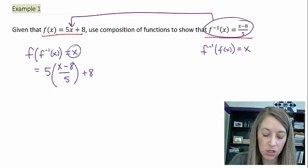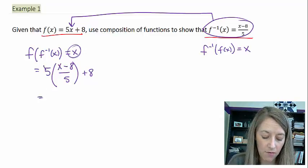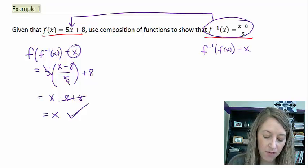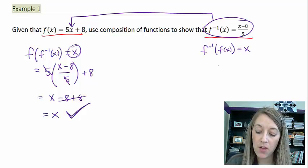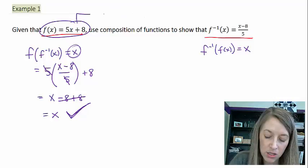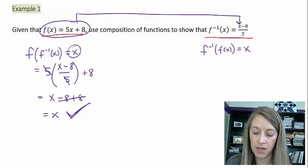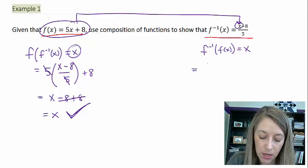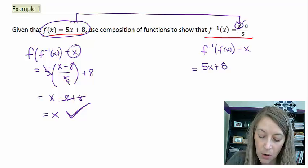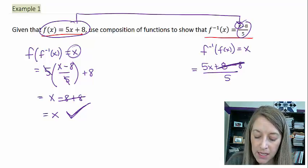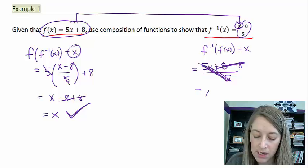So I just simplify it. 5 divided by 5 cancels out, leaving me with x minus 8 plus 8. The 8's cancel out and of course this works out to be x. So half of my property holds true. Now I've got to do the other way. So now I've got to take my f of x and I've got to plug it in for all of the x's in my f inverse of x. So this gives me, instead of x, I substitute in 5x plus 8. My original function has minus 8 over 5. If I simplify this, the 8's cancel out and then my 5's cancel out and of course this is also x.